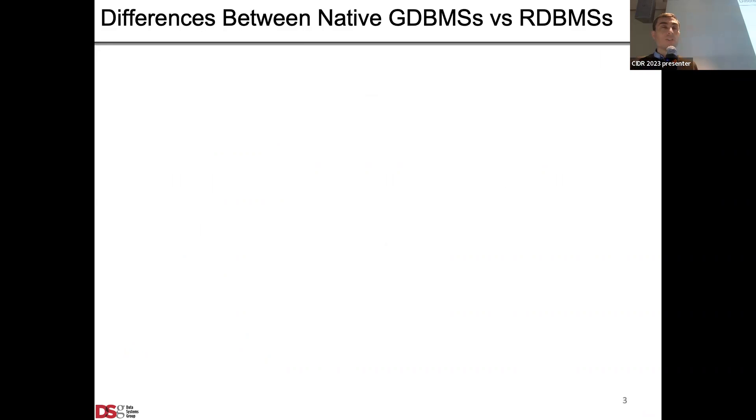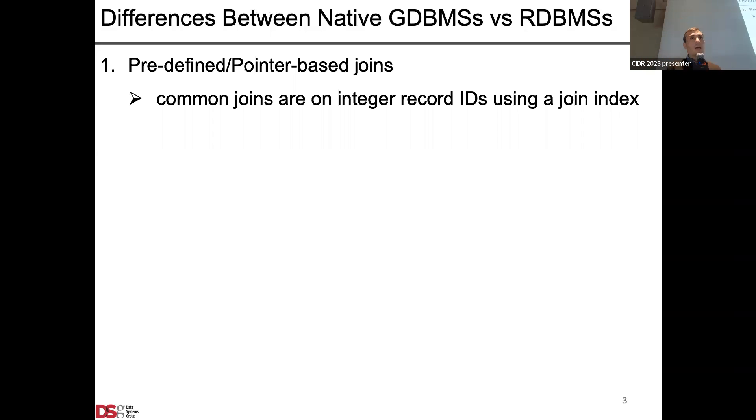Despite being relational at their cores, there are still some differences between graph database management systems and relational systems in terms of the feature sets that they optimize for. These are the feature set that we try to optimize in Kuzu. The first is the most common joins in these systems are predefined or pointer-based joins between node records and their neighbors. I call this predefined because these are predefined to the system through edges and the system can exploit this and create join indices based on node record IDs. This is one feature that's kind of global across graph database management systems.